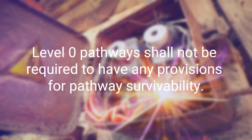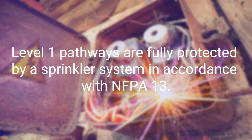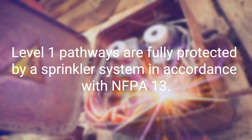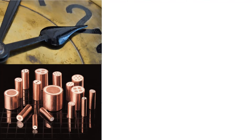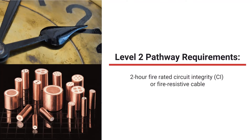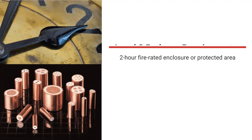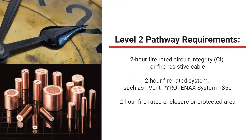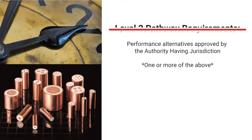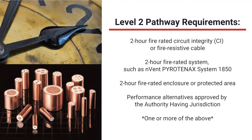Level 0 pathways shall not be required to have any provision for pathway survivability. Level 1 pathways are fully protected by a sprinkler system in accordance with NFPA 13. Level 2 pathway survivability consists of one or more of the following: a 2-hour fire rated circuit integrity (CI) or fire resistive cable, a 2-hour fire rated system such as Pyrotenics System 1850, a 2-hour fire rated enclosure or protected area, or a performance alternative approved by the local authority having jurisdiction.